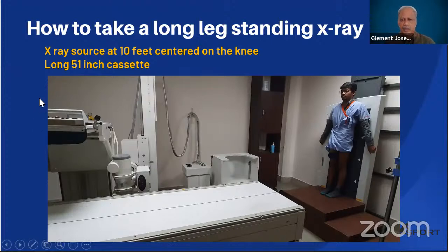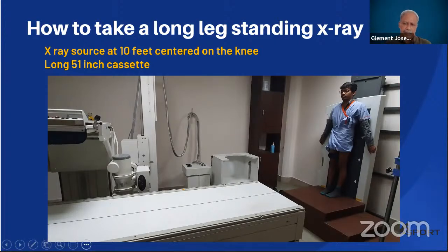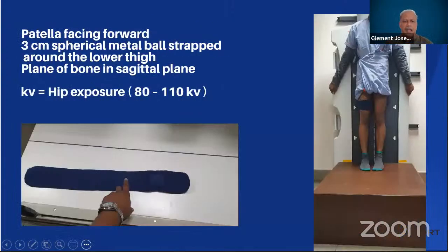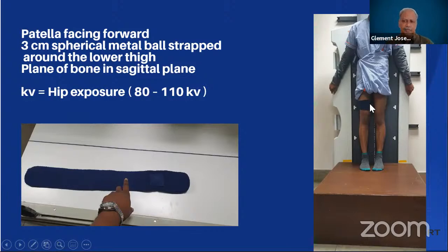We use a long multi-cassette device in which the image is captured by four cassettes, and software stitches the images together. It is very important to have a radiological marker in the X-ray — ideally a round metallic ball of 3 cm diameter strapped around the lower part of the thigh in the plane of the bone in the sagittal section.